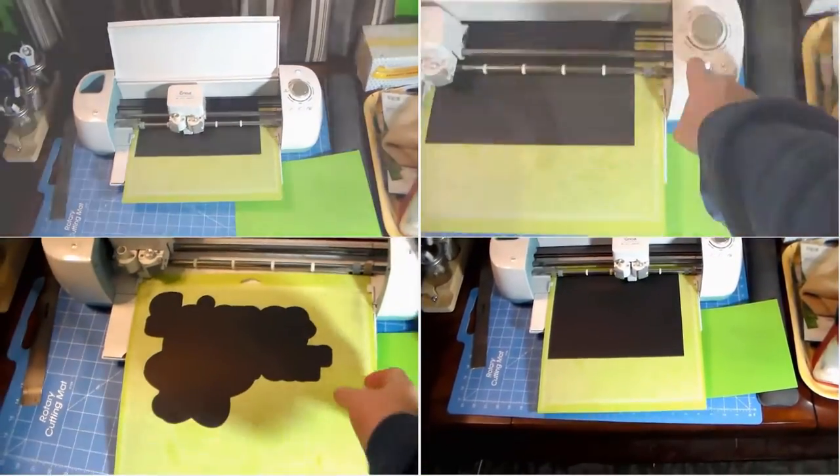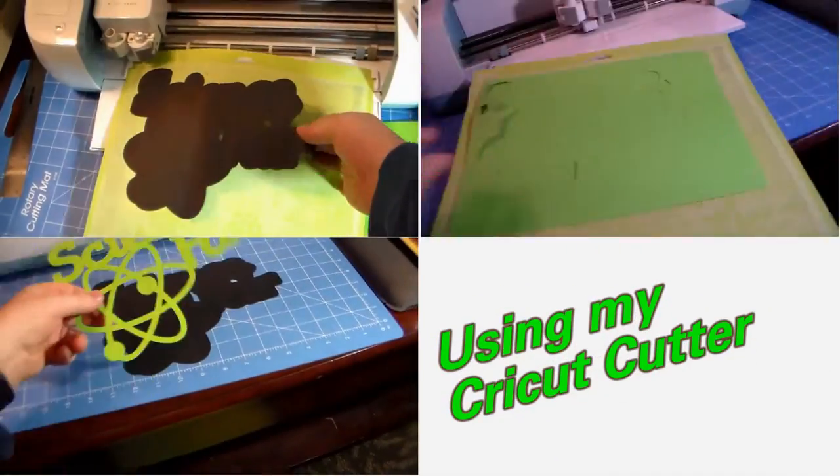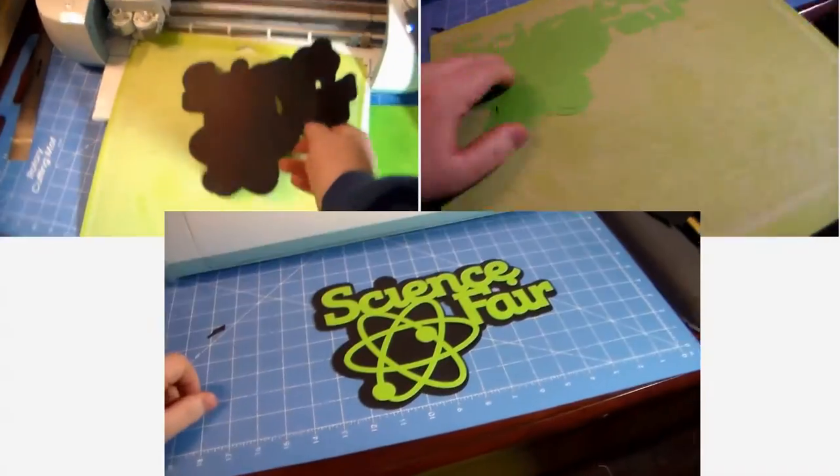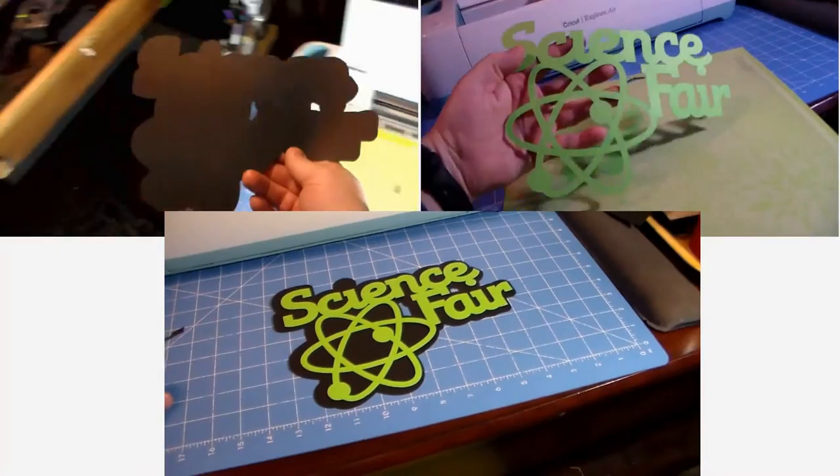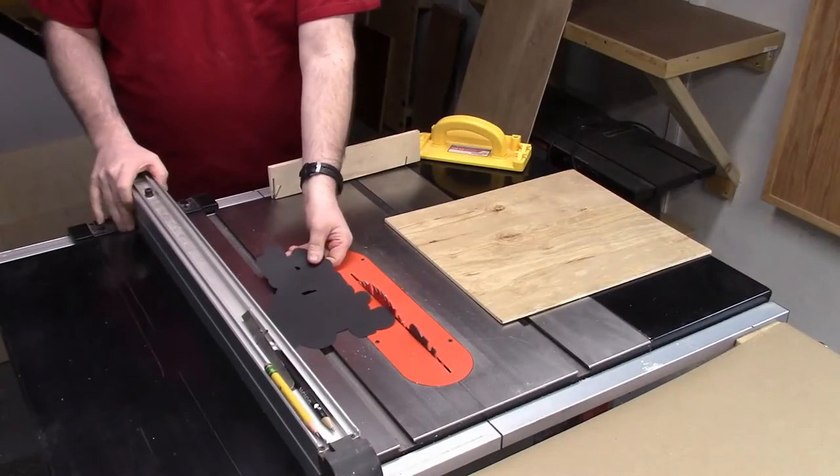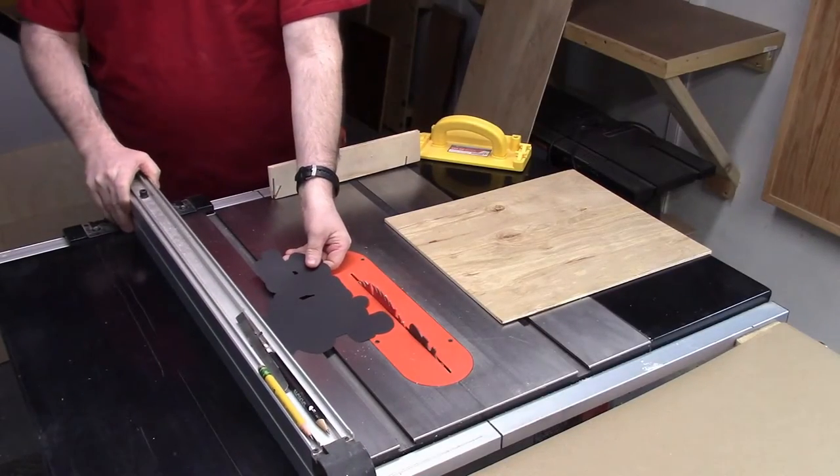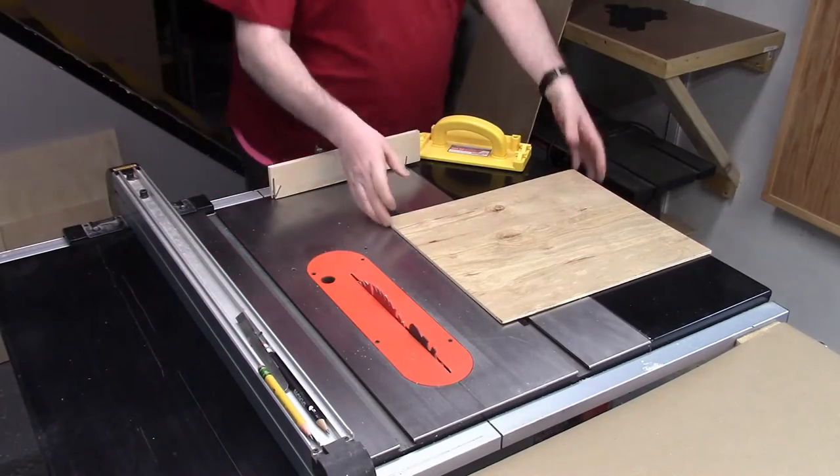And here it is printing. Once it prints out I'm going to go right over to the table saw and cut up some wood for the pattern to attach to. And I'm just using the pattern to come up with how wide I want that board to be.